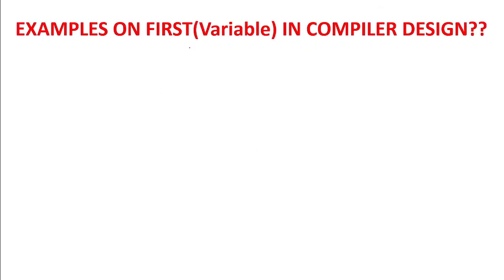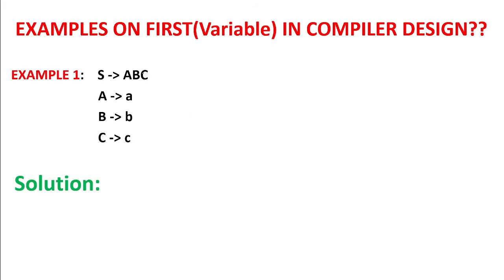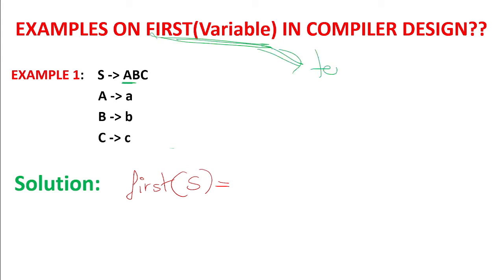Now we will see examples on FIRST in compiler design. So in Example 1, we first find FIRST of S. On the right-hand side of S, capital A is there first — but A is not a terminal. FIRST of any variable has to be a terminal only; it cannot be another variable. So we have to find the FIRST of A instead, because we want a terminal only.